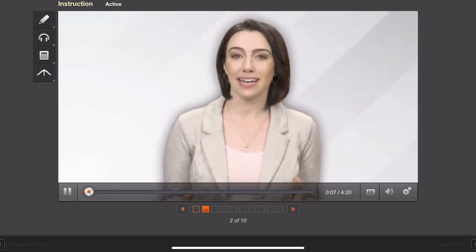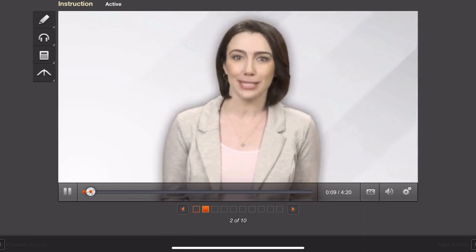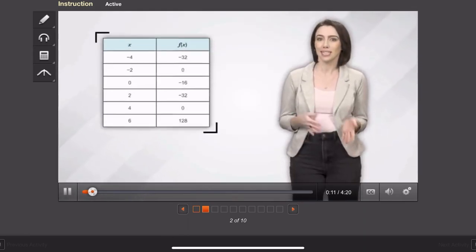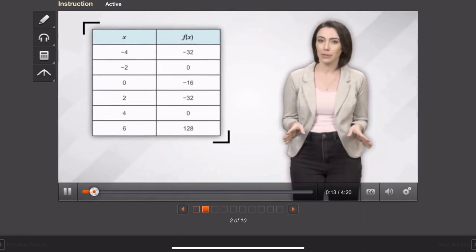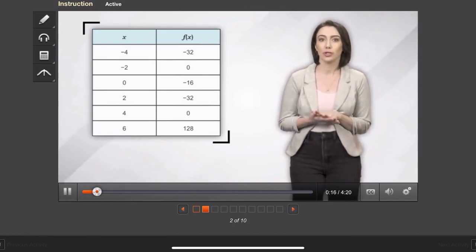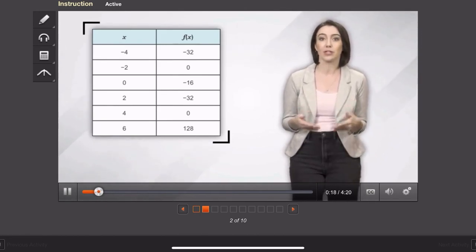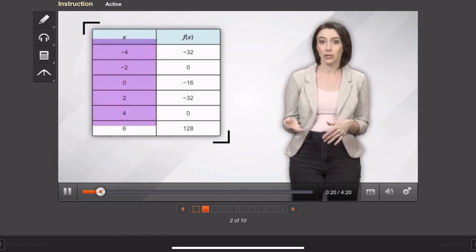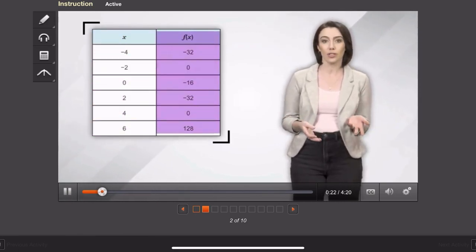Let's see how we can analyze functions represented in tables. First, we'll need a table. We can assume that it represents a continuous graph. The table shows just some of the ordered pairs that would be in that function, values of the domain, and their corresponding outputs.